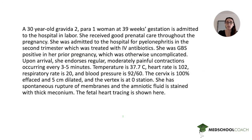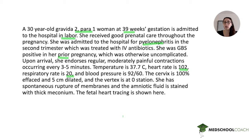We read the stem from the top and highlight key elements. The patient is a 30-year-old G2P1 at 39 weeks in labor with good prenatal care, prior pyelonephritis treated with IV antibiotics, and prior GBS-positive pregnancy. I recommend highlighting any abnormal vital signs: temperature 37.7°C is still within normal range; heart rate 102 is mild tachycardia; respiratory rate 20 is mild tachypnea; blood pressure 92/60 is on the lower end of normal.